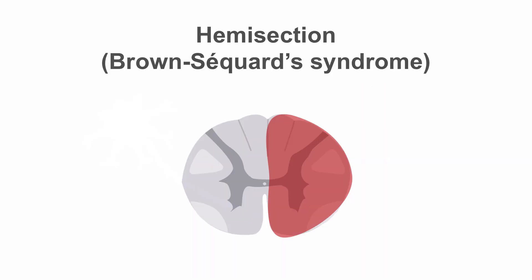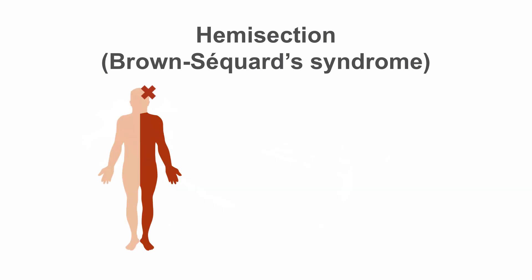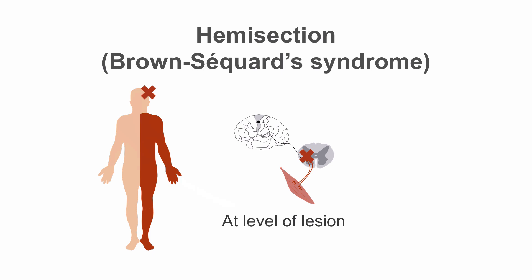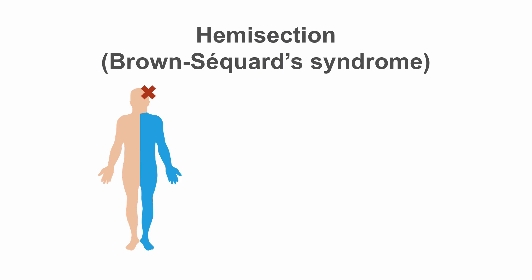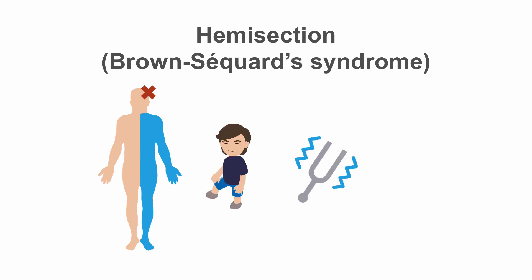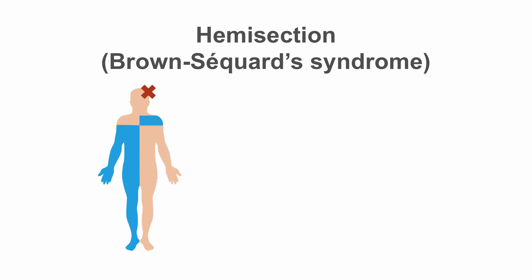Complete hemisection of the spinal cord produces what is known as Brown-Séquard syndrome. The segment bearing the lesion shows lower motor neuron changes from damage to anterior horn cells. Below that segment, there is ipsilateral upper motor neuron paresis from damage to the lateral corticospinal tract. There is ipsilateral loss of proprioception, vibration, and two-point discrimination below the lesion due to posterior column damage, since these fibers do not cross until reaching the brainstem. There is also ipsilateral anesthesia in the sensory distribution of that segment due to involvement of fibers which enter the segment but have not yet crossed.